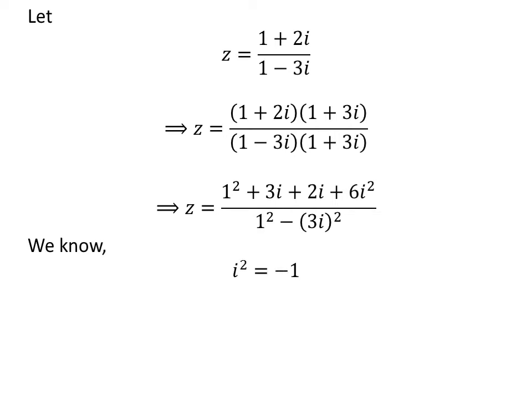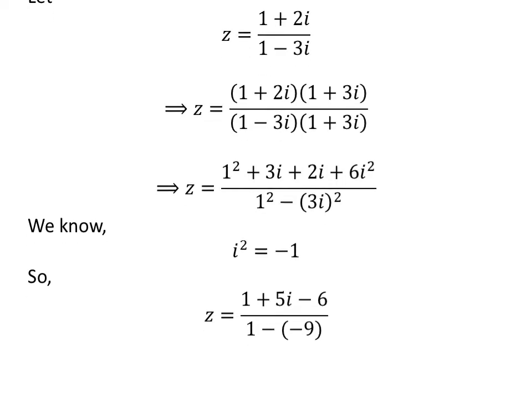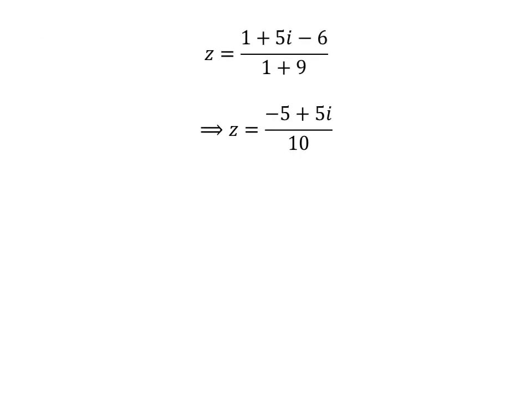We know the square of the imaginary unit i is equal to minus 1. So, application of this fact gives us z is equal to 1 plus 5 times i minus 6 upon 1 minus of minus 9. Further simplification gives us z is equal to minus 5 plus 5 times i upon 10. Cancelling out the common factor 5 gives us z is equal to minus 1 plus i upon 2, which can be written as minus half plus half times i.